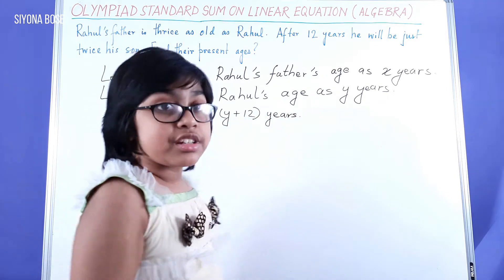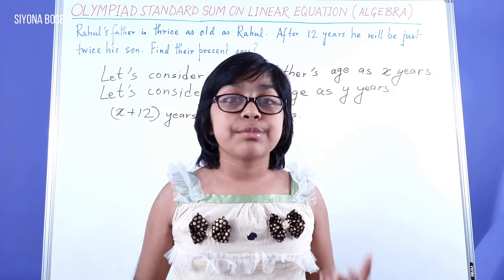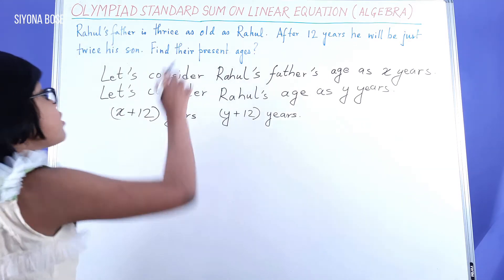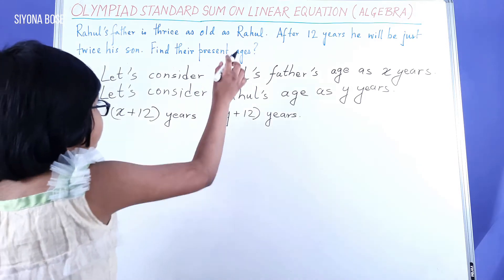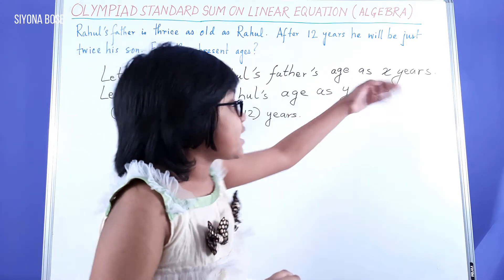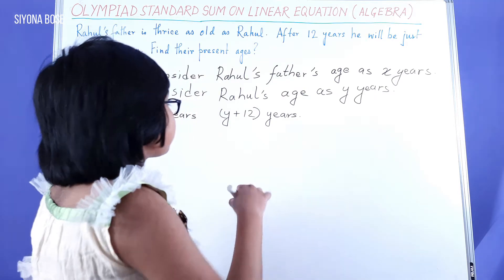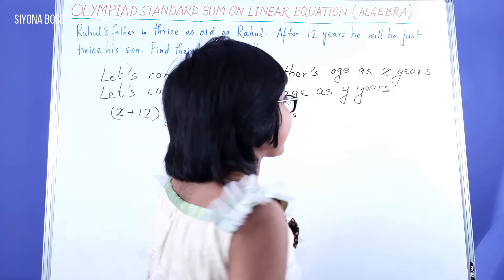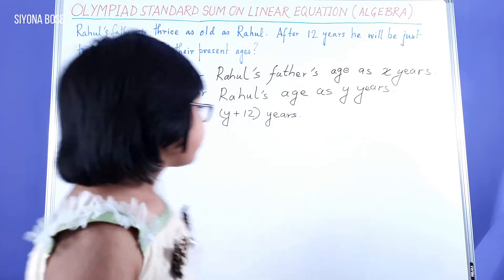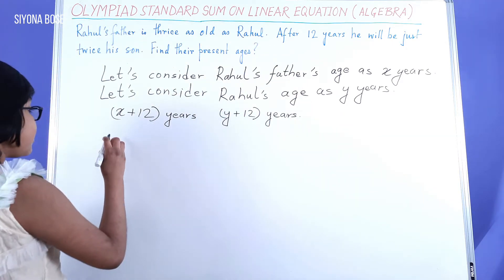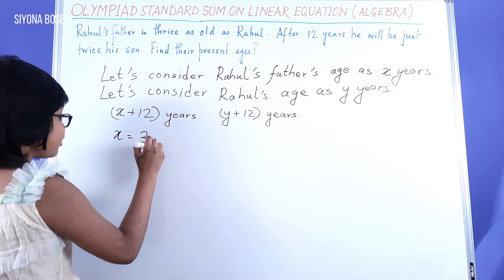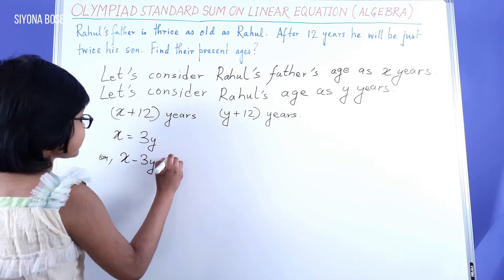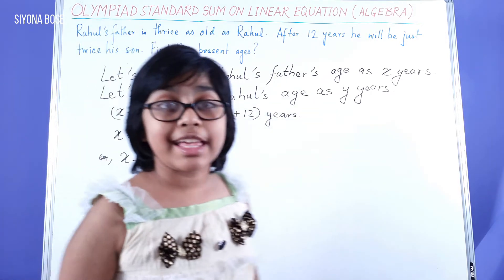Now, since we took two literals, we have to make two equations. If you check carefully, Rahul's father's age is thrice that of Rahul's age. That means Rahul's age is Y, so Rahul's father's age would be 3Y. Since Rahul's father's age is also X, that means X equals 3Y, or X minus 3Y equals 0. We can consider this as equation number 1.